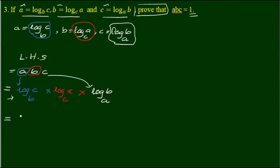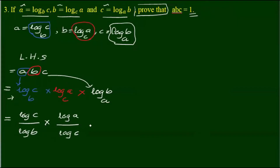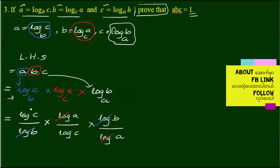Log c base b equals log c by log b. We apply the change of base: log c by log b, and we use the base value into log a by log c, into log b by log a. Log b, log b, log c, log c — that's all. That's why one is the result using the base value.